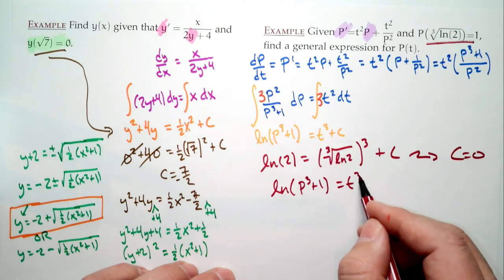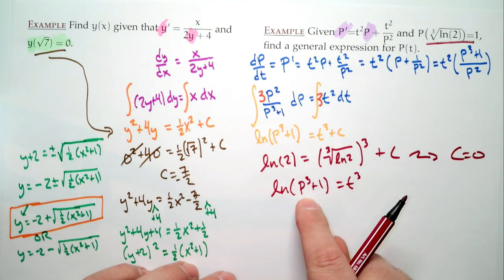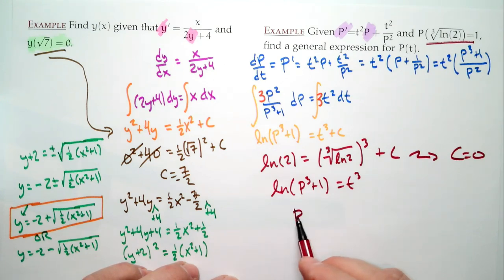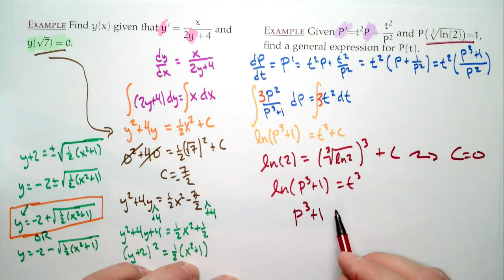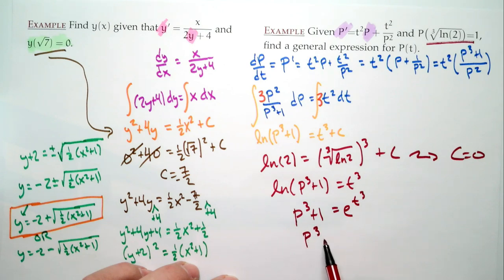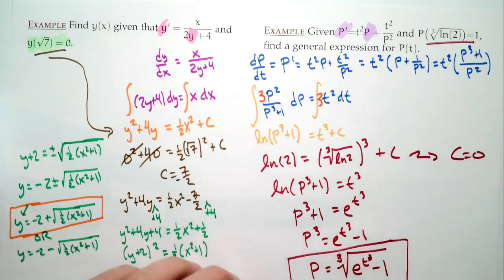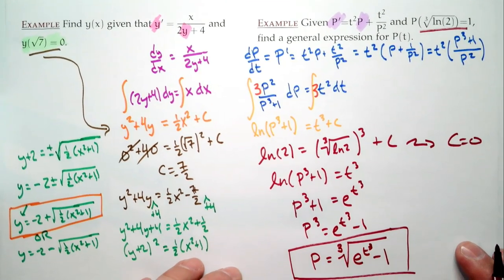With c=0: ln(p³+1) = t³. Exponentiate: p³+1 = e^(t³). Subtract 1: p³ = e^(t³) - 1. Take the cube root: p = ∛(e^(t³) - 1). That's our answer.